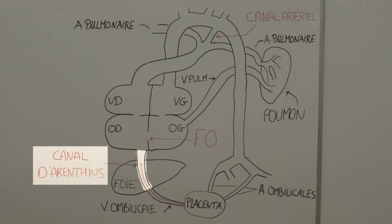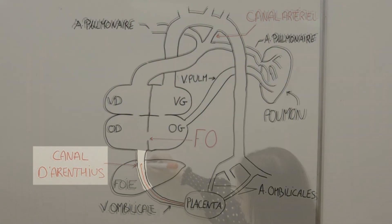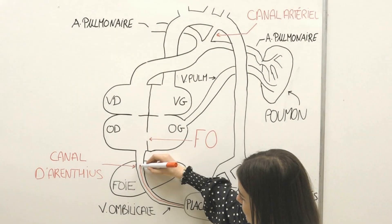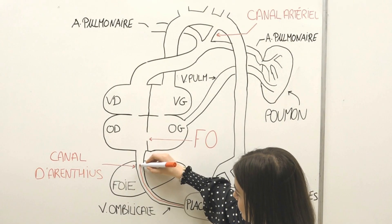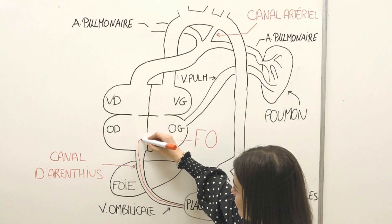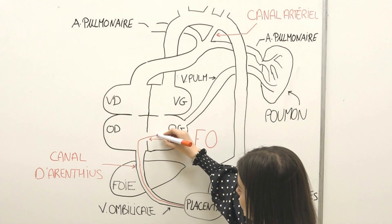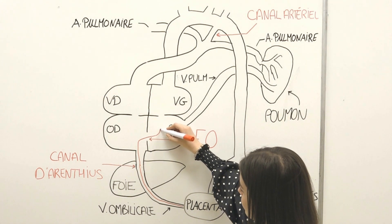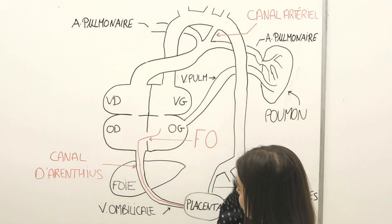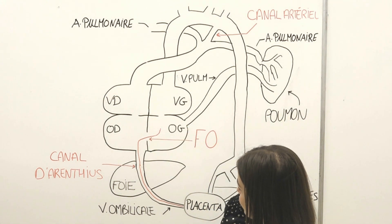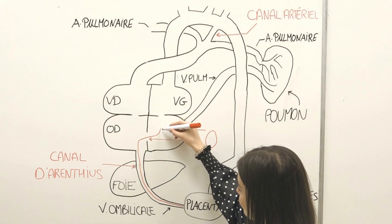Ce canal d'Arantius est donc le premier shunt franchi par le sang. On parle de shunt parce qu'il permet de court-circuiter le foie, afin que ce dernier ne consomme pas d'oxygène. Arrivé dans l'oreillette droite, la majorité du sang passe directement dans l'oreillette gauche via le foramen ovale, le deuxième shunt, celui-ci étant intracardiaque.